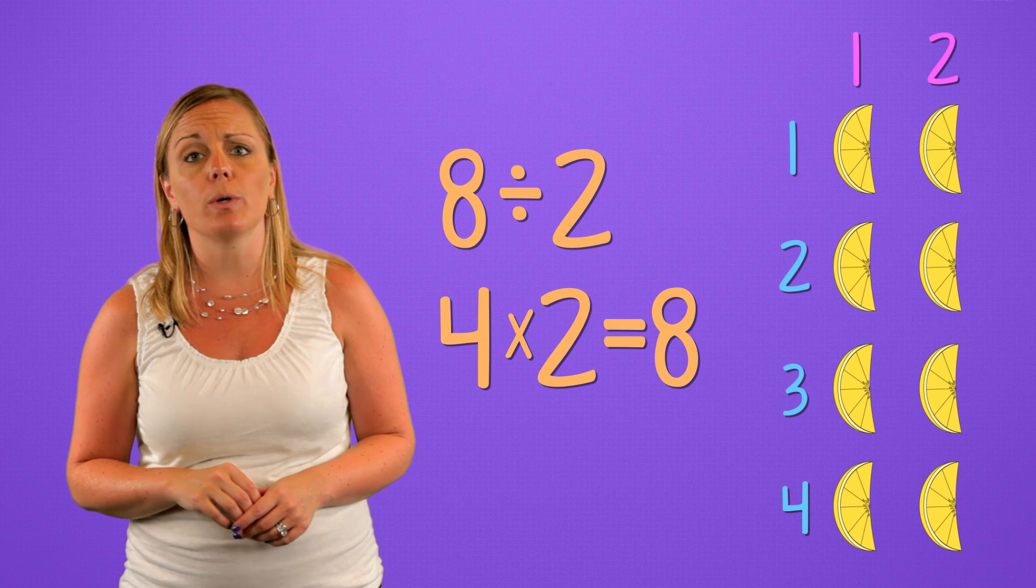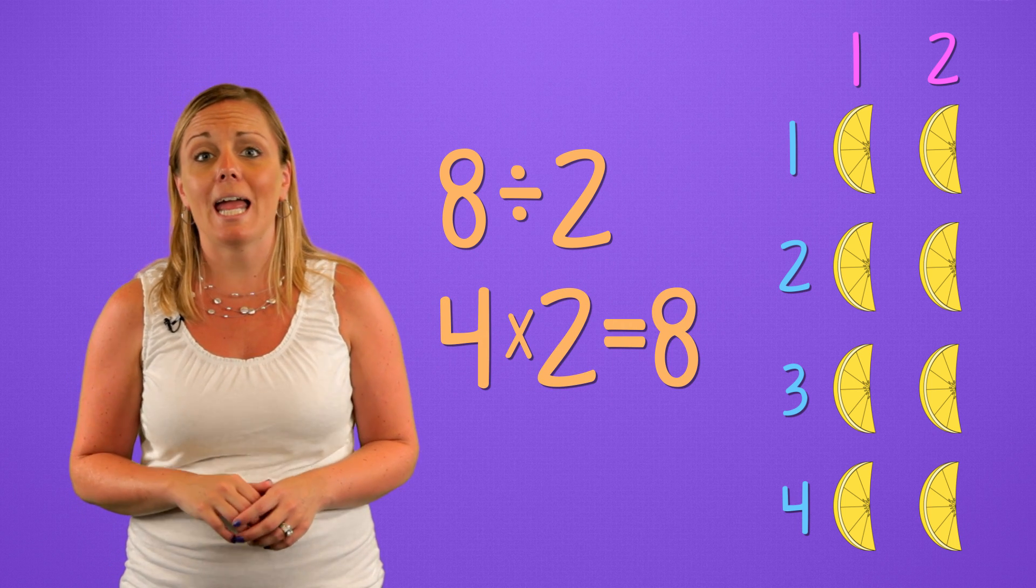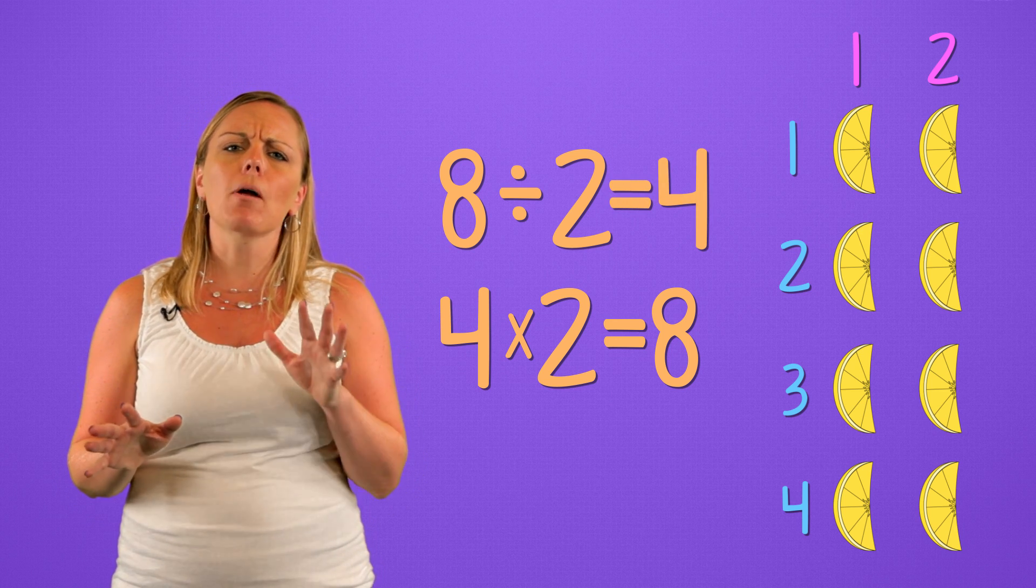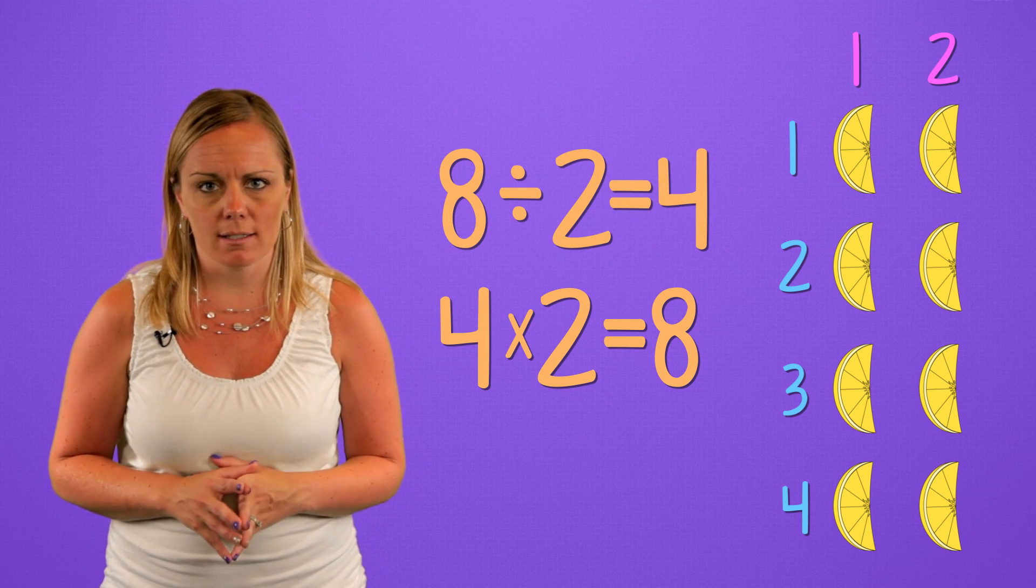Four times two equals eight. So, eight divided by two equals four. Now, I'm going to recolor these lines. Which of the colors represents the individual cups?